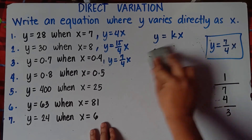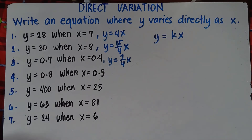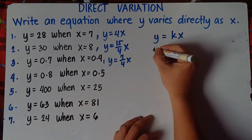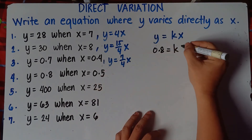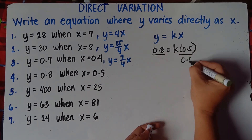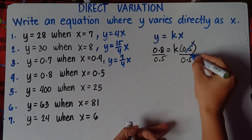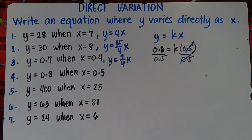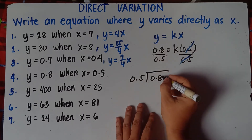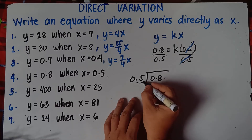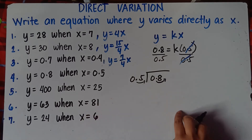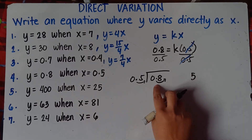Let's try number 4 — it's still a decimal. Our y is 0.8 and x is 0.5, so this will be 0.8 equals k times 0.5. Divide both sides by 0.5 so the remaining equation will be k. Again, make your divisor a whole number — move 1 decimal place, so 0.5 becomes whole number 5 and 0.8 becomes whole number 8.